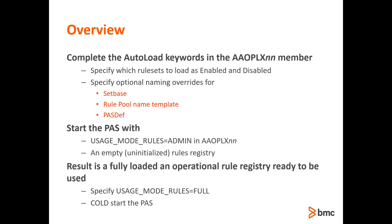Once the PaaS is restarted with the Autoload option and it completes its work, the PaaS is ready to cold start in full Rules Management mode. At that point, the PaaS is fully converted to Rules Management and is running with the information that was loaded into the registry. The BB Parm version of the Rule Sets will no longer be used by this PaaS.